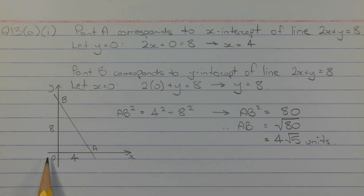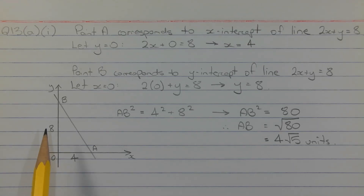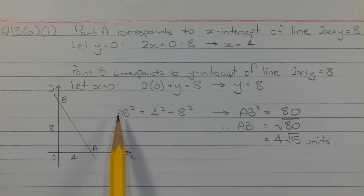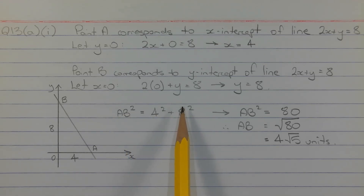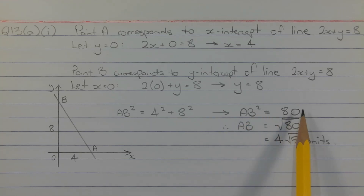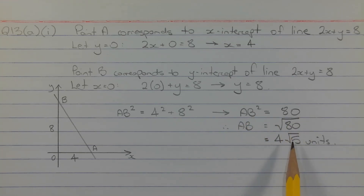So the base of the right angle triangle is 4 units and the height is 8 units. Using Pythagoras' theorem, AB squared is equal to 4 squared plus 8 squared, so AB squared is equal to 80. Therefore AB is equal to the square root of 80, or 4 root 5 units when simplified.